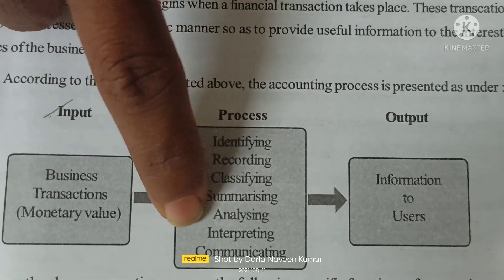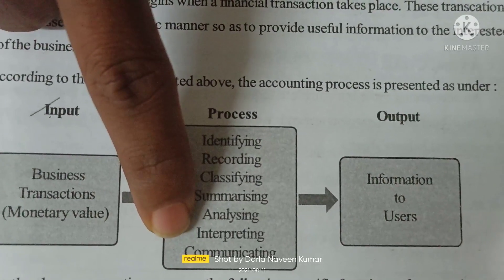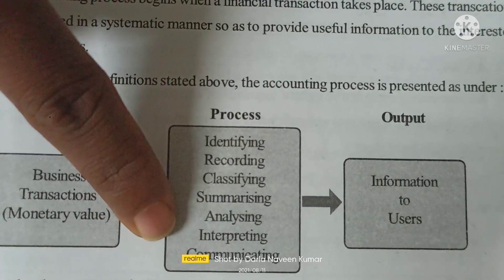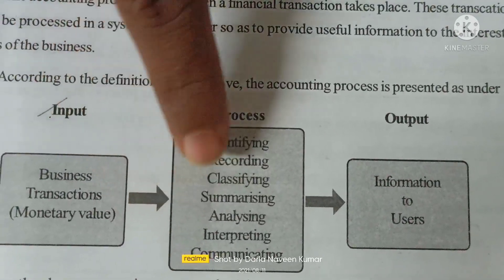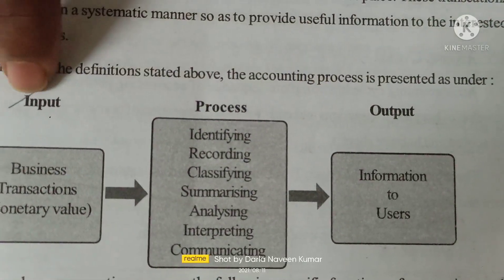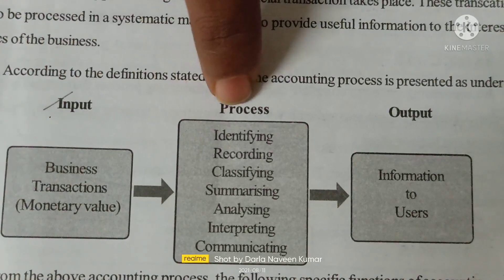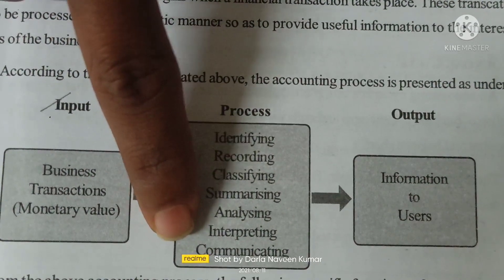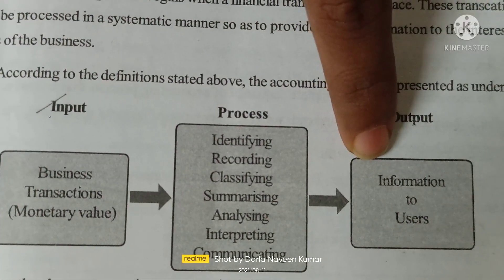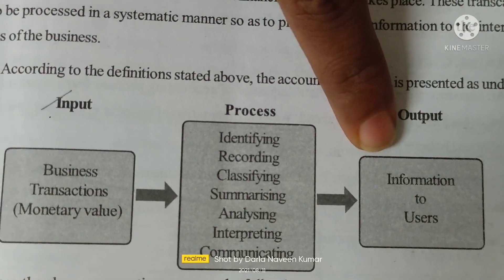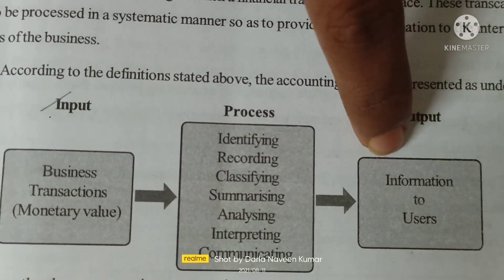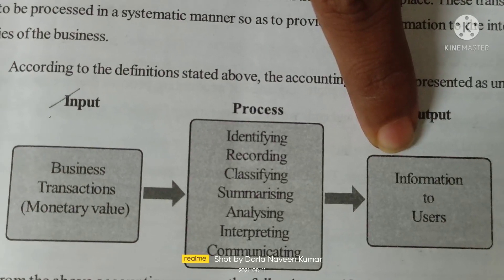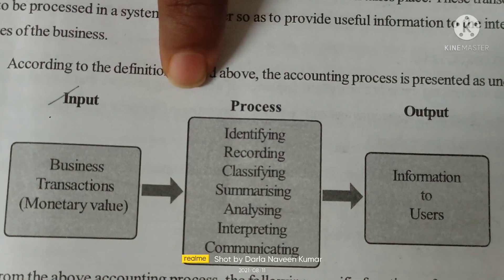After summarizing, we analyze by posting transactions into another account. Then interpreting — giving explanation about the accounts result. Then communication — providing this information for a useful purpose. The output is information to users. We are writing from journal entries to final accounts in this process, and we provide information about profit or loss or financial status. Users means investors, creditors, government, producers, employees, customers — everybody is a user of business information.